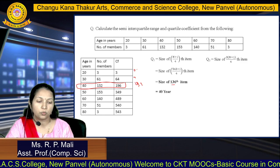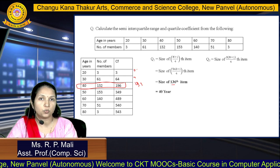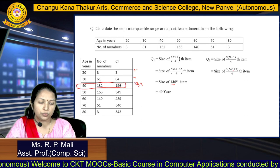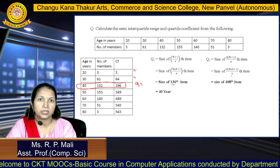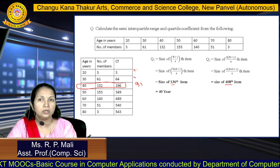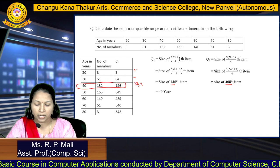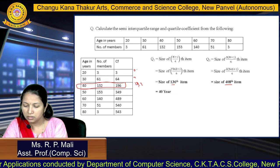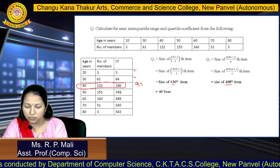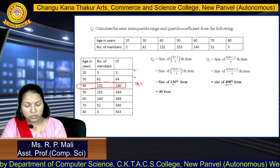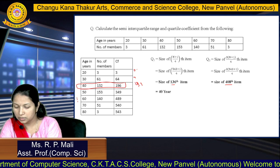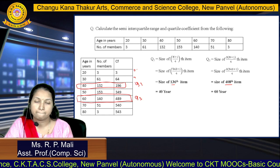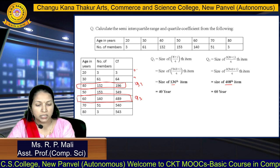Likewise, we find Q3. The formula for Q3 is 3 times N plus 1 divided by 4. N is 543, so 3 into 543 plus 1 divided by 4. After calculation, you get the position as 408. At age 50, the cumulative frequency range ends at 349, so 408 lies in the next class. Therefore, Q3 equals 60.